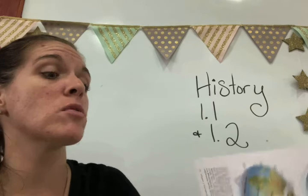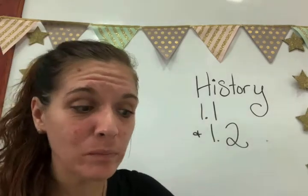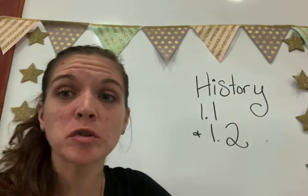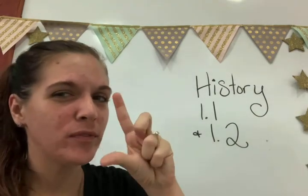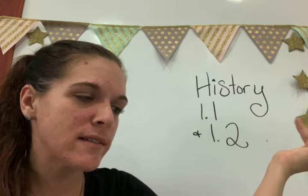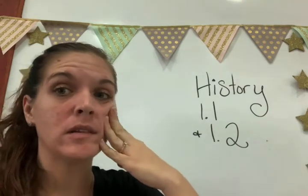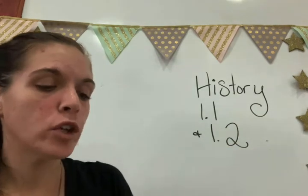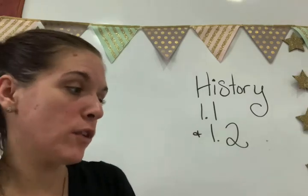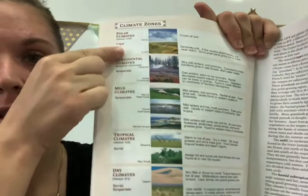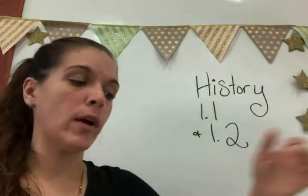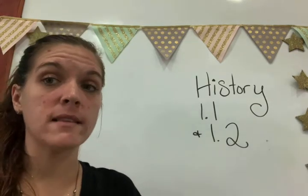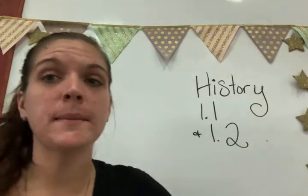For 1.1: all bold terms, about two sentences each, plus the section review. For 1.2: all bold terms — these are your climate zones, which is really great information. Look at your pictures because they will help you. I'm also hoping to find a short video about wind patterns and currents to send out tomorrow. Answer your section review, and make sure you cover those bold terms with two sentences each. If you have any questions, let me know — bye!